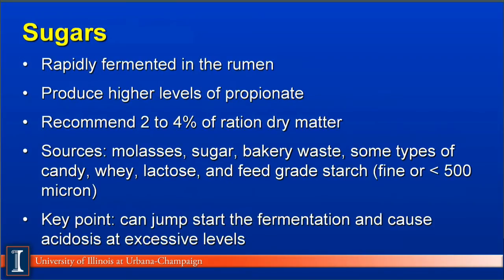Another fraction would be the sugar fraction. Sugars are rapidly fermented in the rumen. According to the new NRC, this rate can vary from 200 to 400% per hour — extremely fast — and this fermentation results in high levels of propionic acid, or propionate. The recommended levels of sugar in high-producing dairy cow rations is 2 to 4% of the total ration dry matter. Sources of sugar could include molasses, actual sugar, bakery waste, certain types of candy, whey, lactose, and feed-grade starch that is extremely finely processed, less than 500 microns. The key point is that these sugars can rapidly jumpstart fermentation, but also can cause rumen acidosis if at excessively high levels.